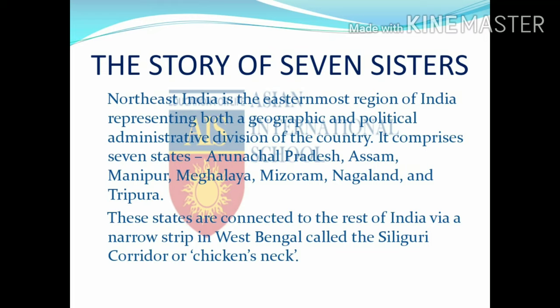Let us now learn the story of the Seven Sisters. North East India is the easternmost region of India, representing both a geographic and political administrative division of the country. It comprises seven states: Arunachal Pradesh, Assam, Manipur, Meghalaya, Mizoram, Nagaland and Tripura. These states are connected to the rest of India via a narrow strip in West Bengal, called the Siliguri Corridor or the Chicken's Neck.